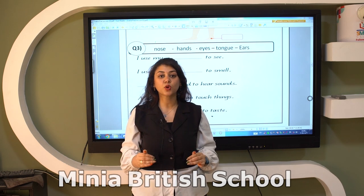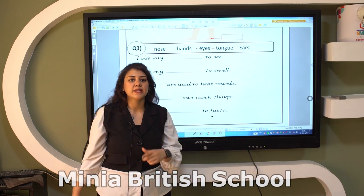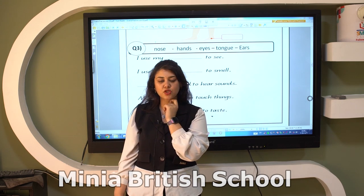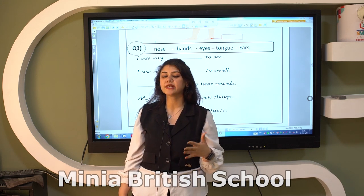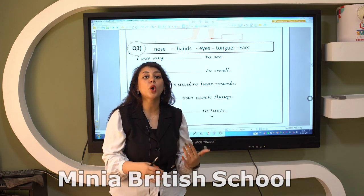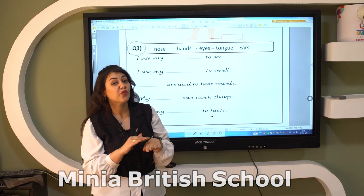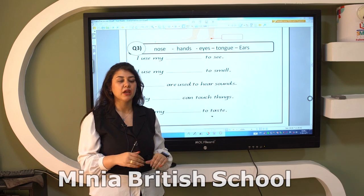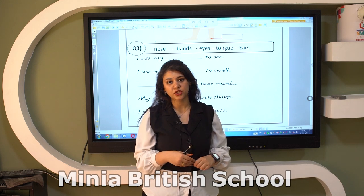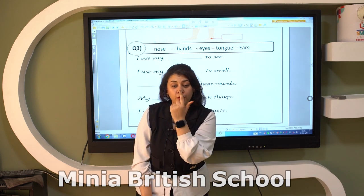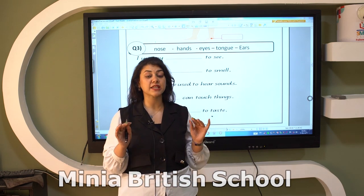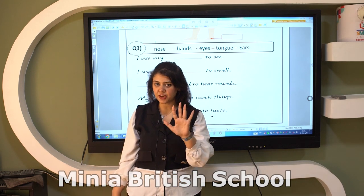I have a tongue — my tongue helps me to taste food, so the name of the sense is taste. I have skin — skin covers all my body and helps me to feel or to touch, so the sense is called feel or touch. I have one nose — my nose helps me to smell, so the name of the sense is smell.